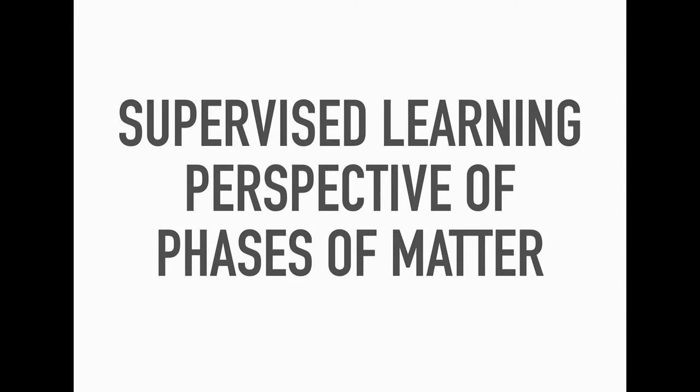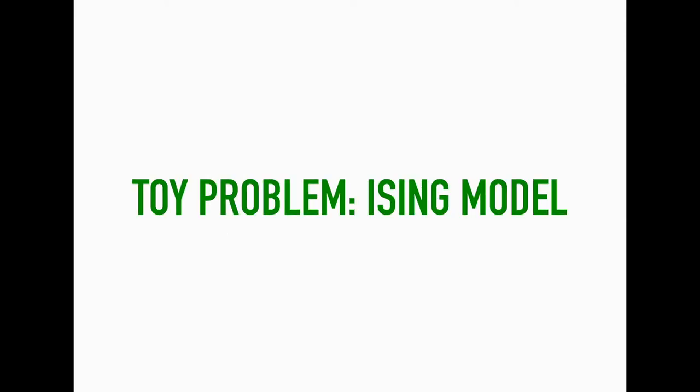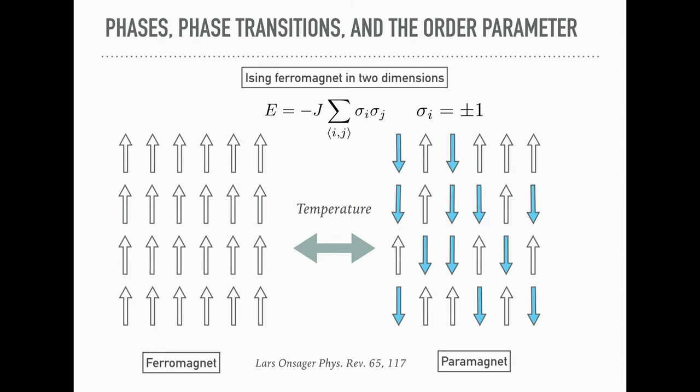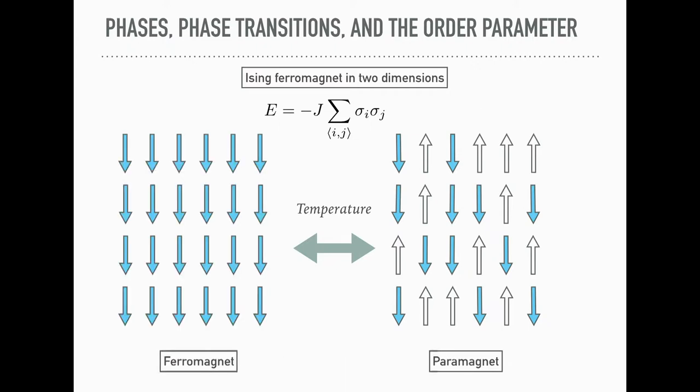Supervised learning of phases of matter. I'm going to introduce the idea using the simplest problem, the Ising model. This is the Ising model. It's a classical system of variable sigma i that take values plus or minus one, and you have this energy function. At low temperature, in order for the system to minimize this energy, the spins basically polarize up or down. But as the temperature increases, the system transitions to a high temperature phase where the spins are disordered and look random, to a paramagnet.